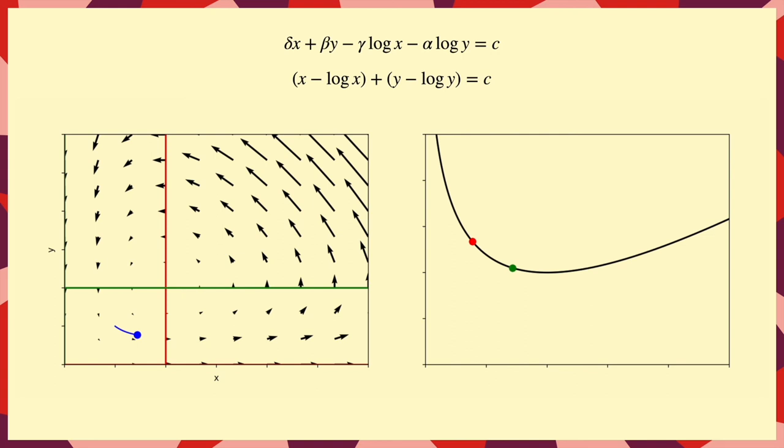And plotting x minus log x on the right, we can see that whenever one population moves upwards, the other must move down to balance it.